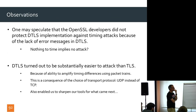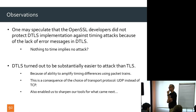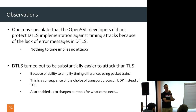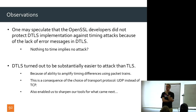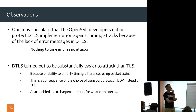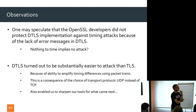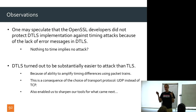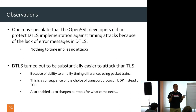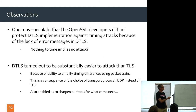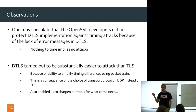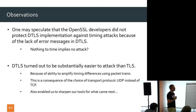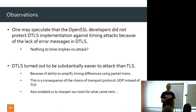DTLS turned out to be easier to break than TLS because timing differences could be amplified and everything could be done in a single session — none of the error messages are fatal. This has to do with running over UDP instead of TCP. For theoreticians: our normal security models for encryption are completely independent of the transport layer, but here the transport type makes a real difference in terms of attacks.